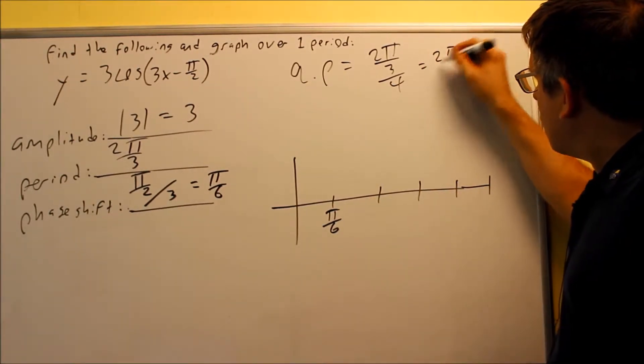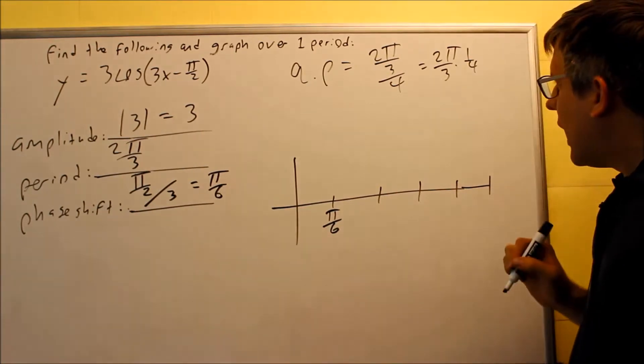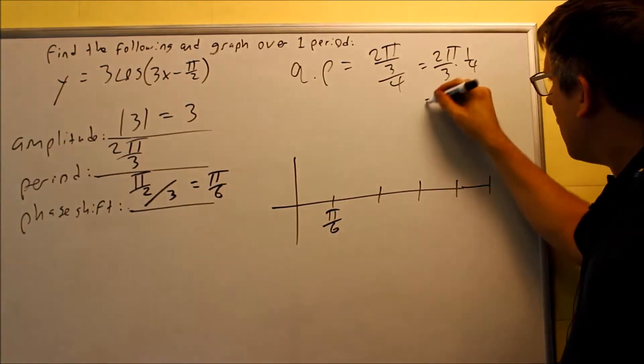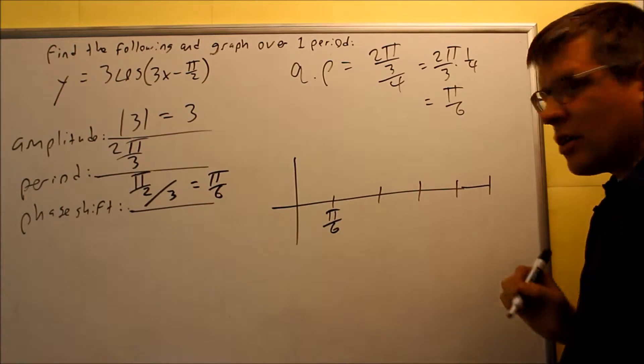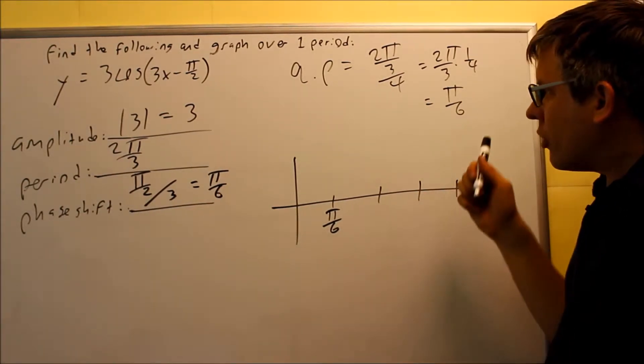If you flip this, you get 2π over 3 times 1 fourth, and you get 2π over 12, which is the same thing as π over 6. So in this case, π over 6 would be your quarter point as well.